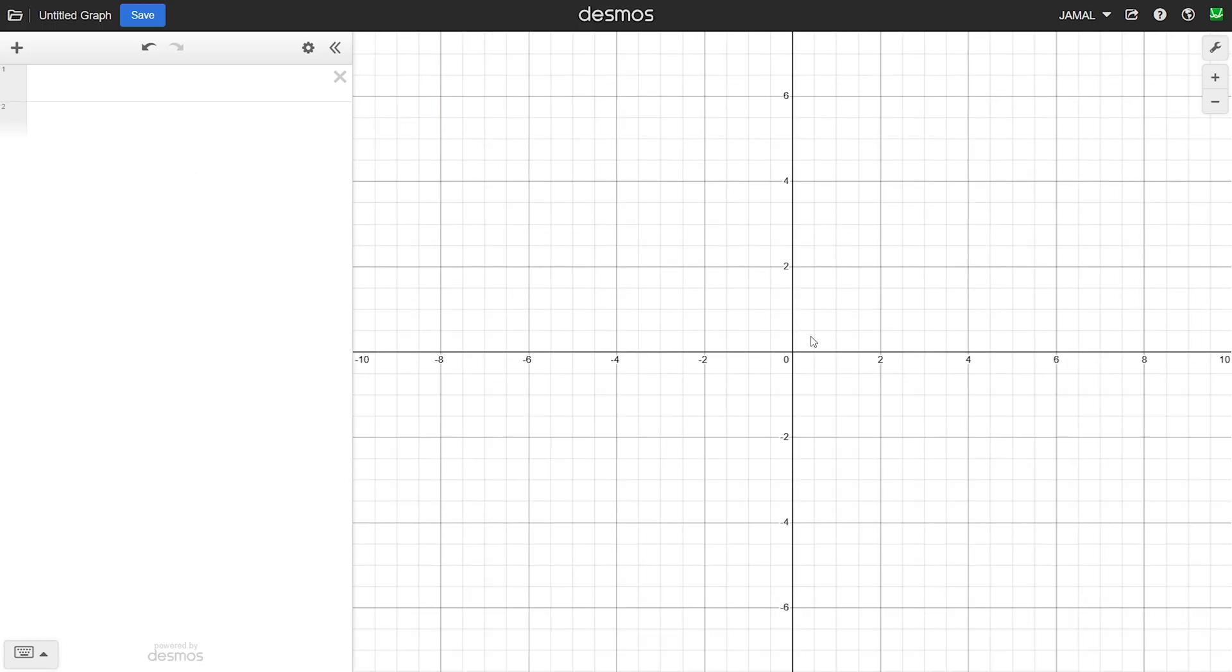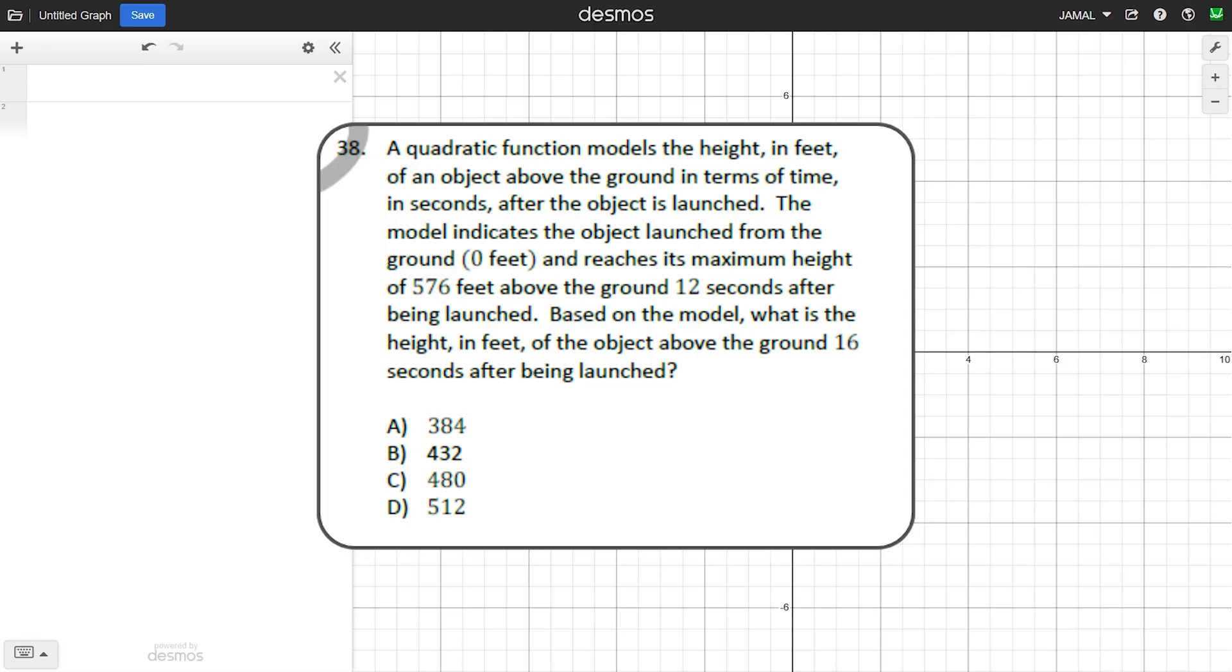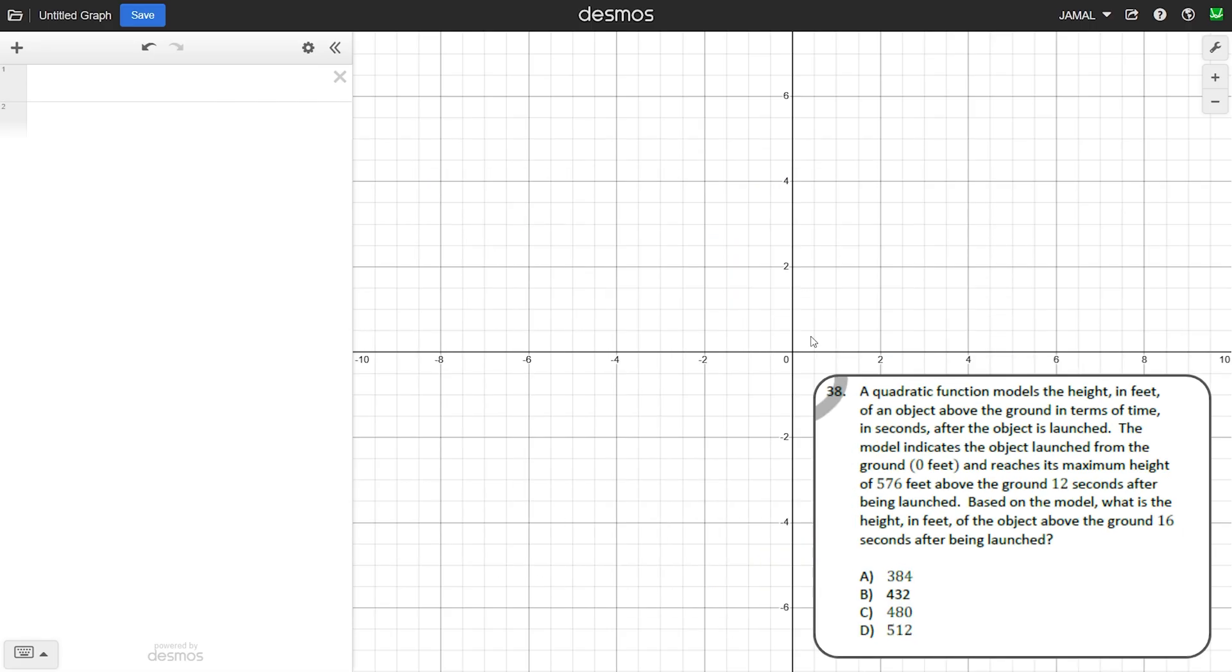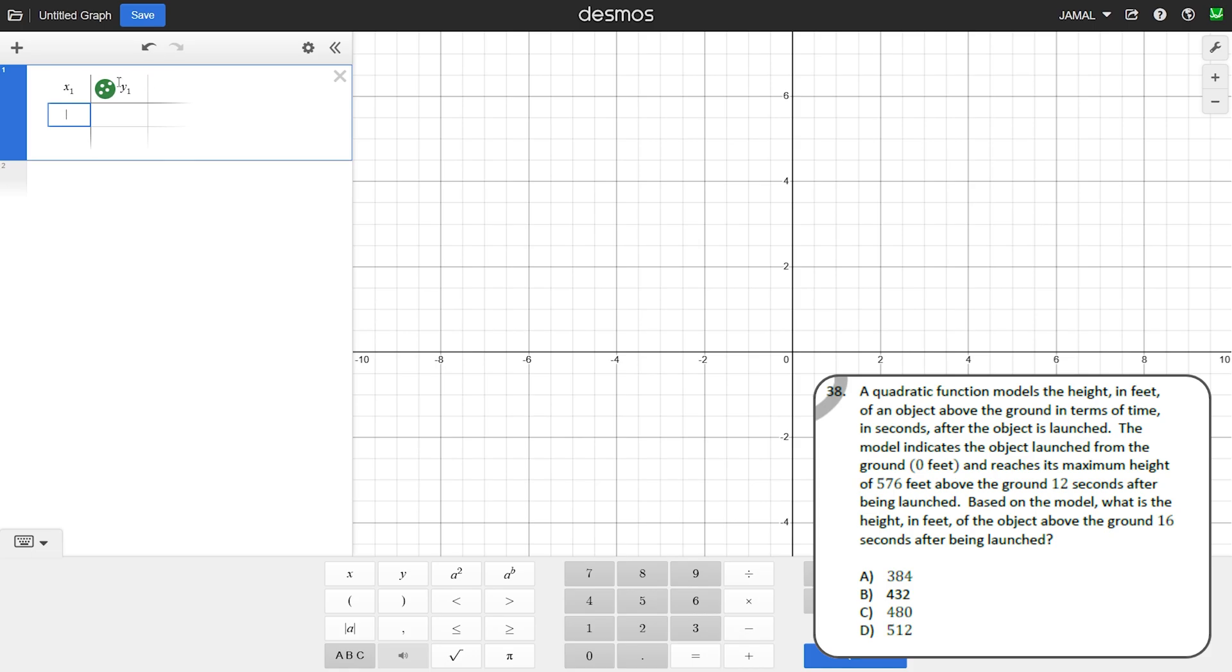Let's move to the next question. This is one of the most common ones on the SATs. A quadratic function models the height in feet of an object above the ground in terms of time in seconds after the object is launched. The model indicates the object launched from the ground at 0 feet and reaches its maximum height of 576 feet above the ground 12 seconds after being launched. Based on the model, what is the height in feet of the object above the ground 16 seconds after being launched? We're going to use table regression and understand what is x and what is y. Almost every time in these types of problems, x will be your seconds. Here x is 0 and height is 0 because it launched from the ground at 0 seconds.